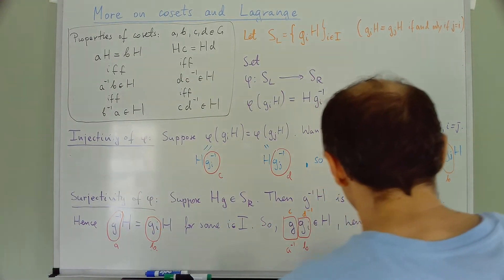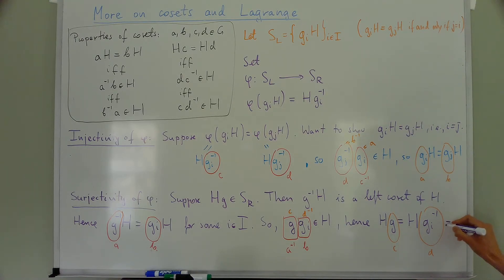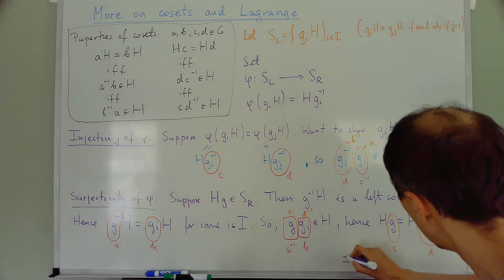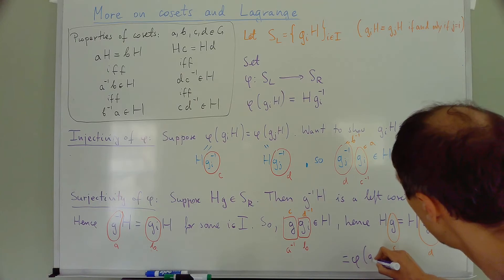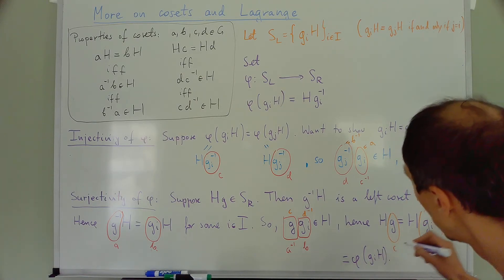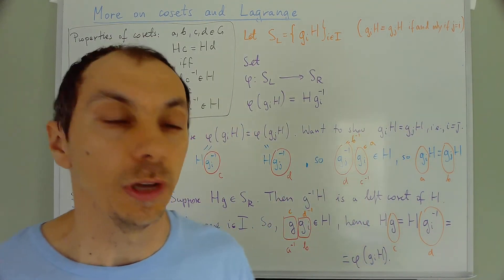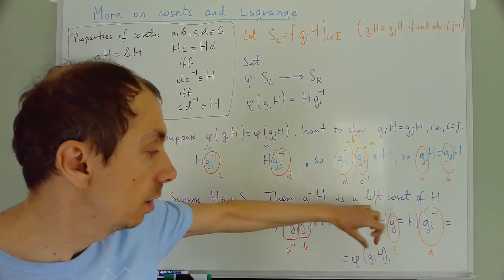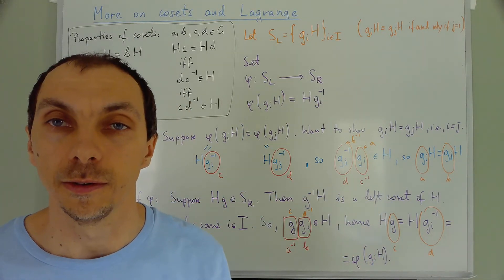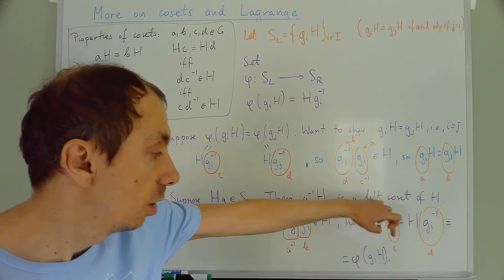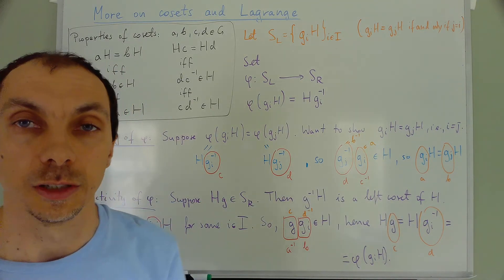But what is H Gi inverse? Well, that is nothing else but phi of Gi H. So what have we shown? We have shown that the right coset HG is equal to the image of the coset, left coset Gi under phi. So phi is surjective.